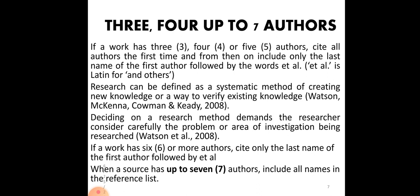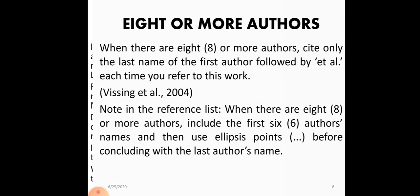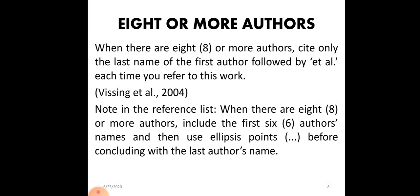If a work has six or more authors, cite only the last name of the first author followed by et al. However, when a source has up to seven authors, include all names in the reference list at the end. If there are eight or more authors, cite only the last name of the first author followed by et al. — for example, 'Wishing et al.' In the reference list when there are eight or more authors, include the first six authors' names and then use ellipsis points. The ellipsis shows that other authors are also included.